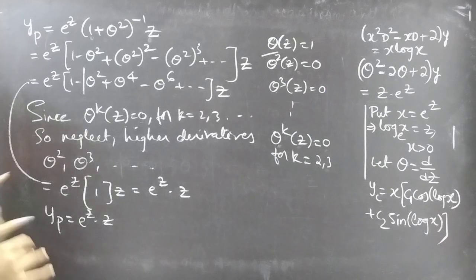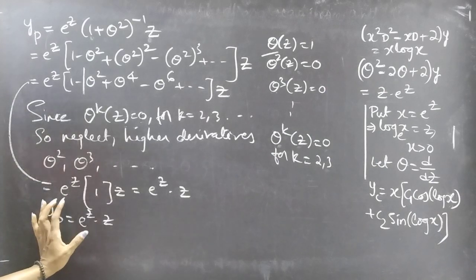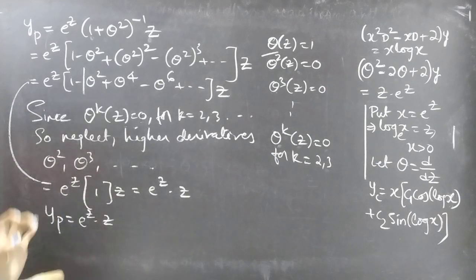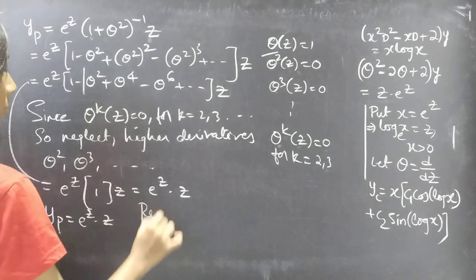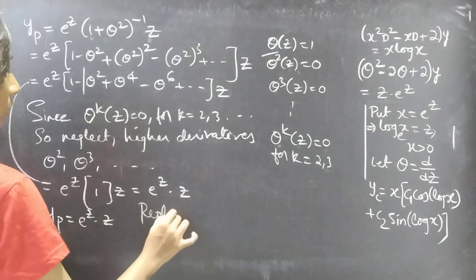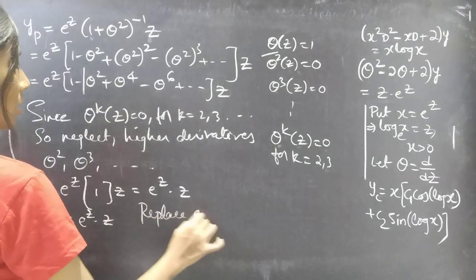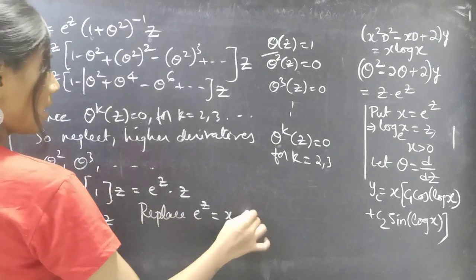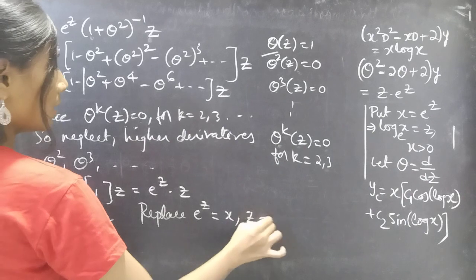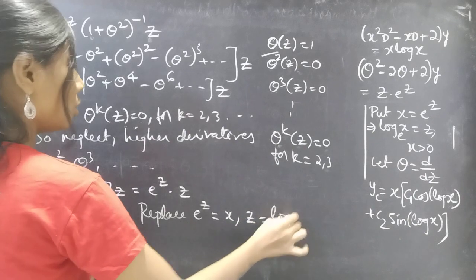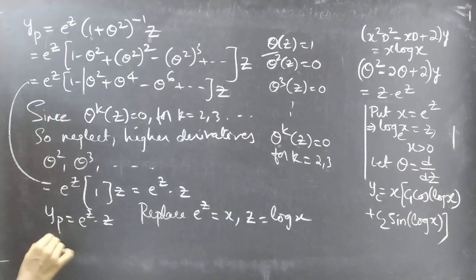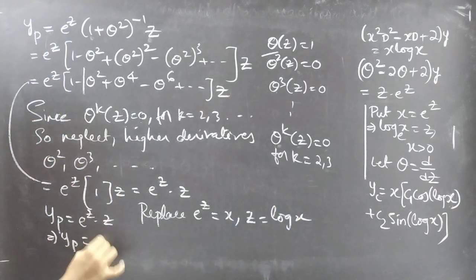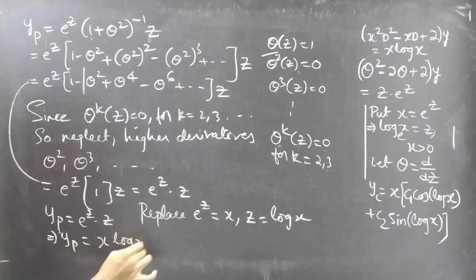But yp is currently in terms of z, and we need it in terms of x. So we replace e to the z by x and z by log x. Then yp becomes x log x.